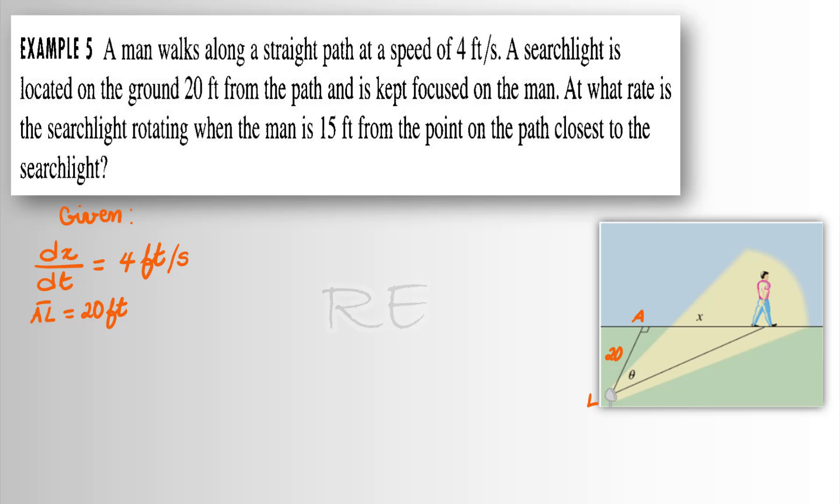So this segment is 20 feet. Now, they want dθ/dt, which is the rate of rotation of the searchlight when x is equal to 15 feet.